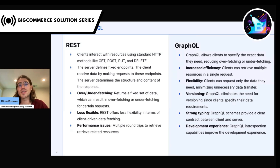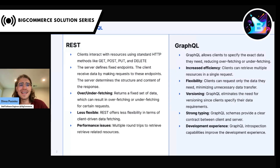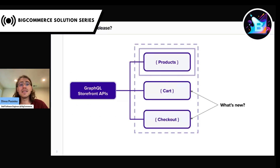Another benefit is strong typing — no more guessing on what's the type and format of the response and individual fields. There are many more pros, but I will just stop there. Until now, GraphQL Storefront API was limited in the number of use cases supported. But as part of the latest release, we added the crucial missing piece: cart and checkout capabilities.